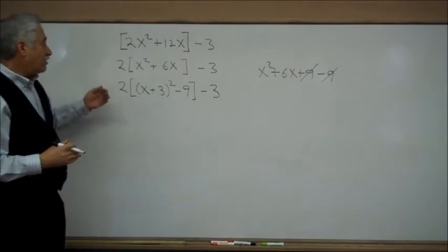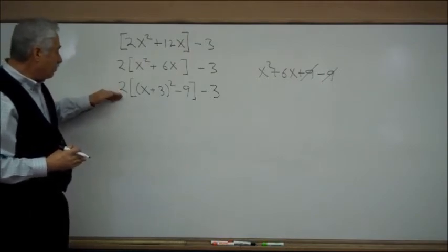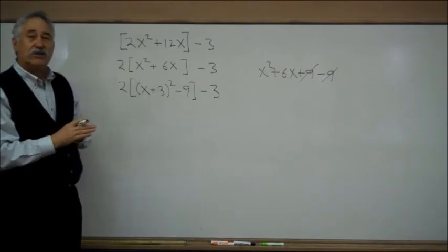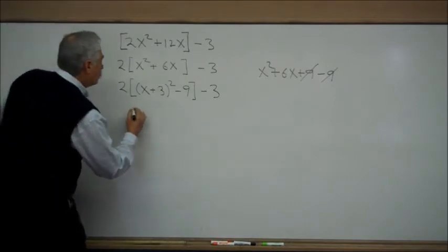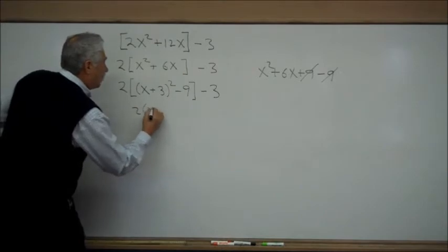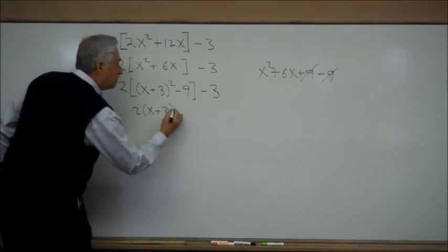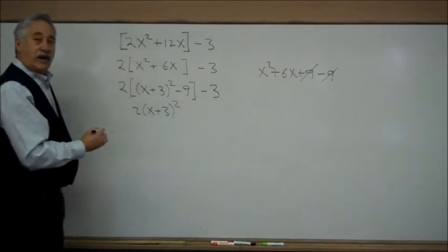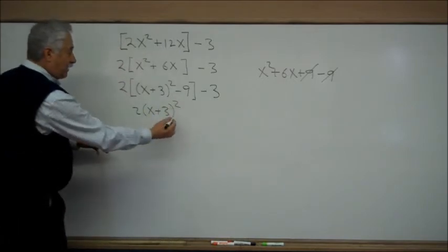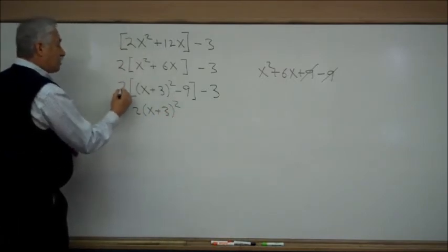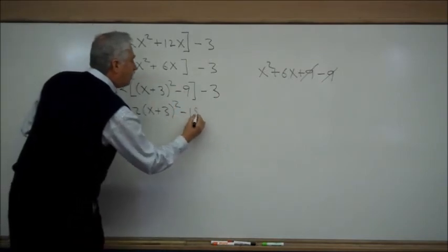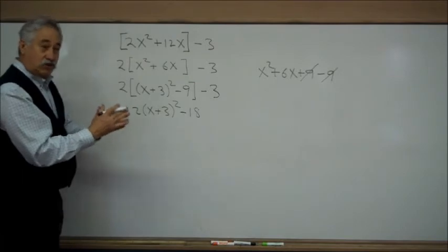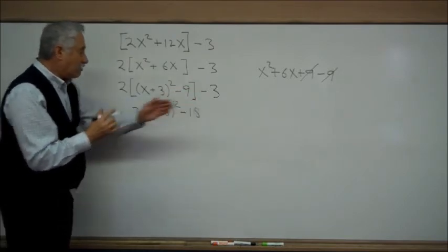We have an order of operations that says we need to multiply the 2 into the brackets. We need to distribute it into the brackets first. So we distribute the 2. We do not bring it into the parentheses or try to. So we have 2 times (x + 3)² minus 18. And the minus 3 is still here.